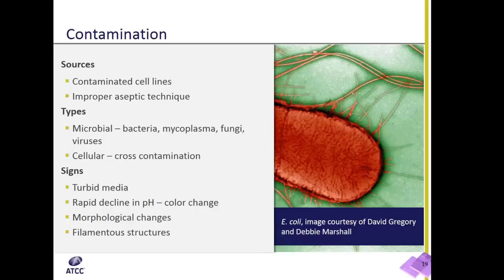Bacterial and fungal contamination are the most commonly seen problems in labs. They can appear quickly, but fortunately are also easily detected. Turbid and acidic media usually indicate the presence of bacteria. Cell stress from microbial contamination may also lead to morphological changes. Fungal contamination is seen by the appearance of obvious filamentous structures in the media. At least one thing about this kind of microbial contamination is that it's easily detectable.